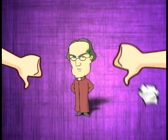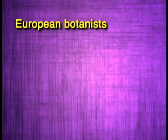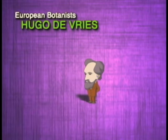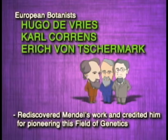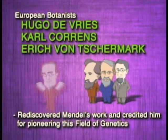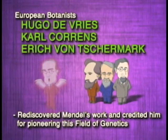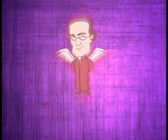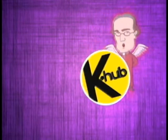Sir, what did he do with his discoveries? Well, he reported all his findings to the Natural History Society, which then published his findings and interpretation in a scientific journal in 1866. His contemporaries, however, did not appreciate his work. It was 16 years later, in the 1900s, when European botanists Hugo de Vries, Karl Correns, and Erich von Tschermak rediscovered his work and credited him for pioneering this field of genetics. Unfortunately, his achievement was fully recognized only after 50 years. His little experiment about garden peas led to the discipline of genetics and brought about Mendel's principles of inheritance.